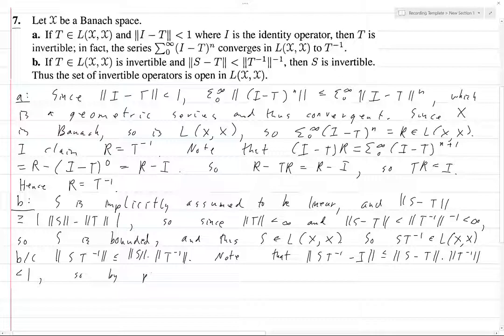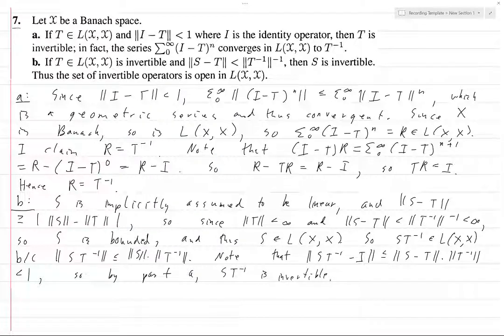So by part A, ST inverse is invertible. This is fine because this is just using ST inverse in place of T. And the only reason it threw me off was because we've got this minus sign here. But news flash, the norm of negative 1 is 1, so that's not something we have to worry about. So this is invertible.